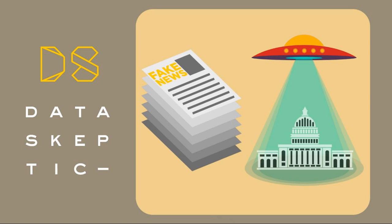False discovery rates basically say: let's just control for the number of errors we might get. If we do a bunch of tests, some of them are going to be spuriously positive. But as long as we have a low rate of spuriously positive findings, we can be happy.